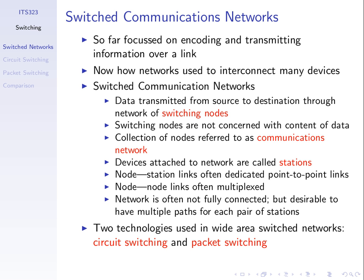Multiplexing allows us to carry the data from multiple users on a single link. This is a typical situation where we have stations connected to nodes or switches. The connections between the nodes or switches may have multiple paths between a pair of stations. Generally, it is not a fully connected network.